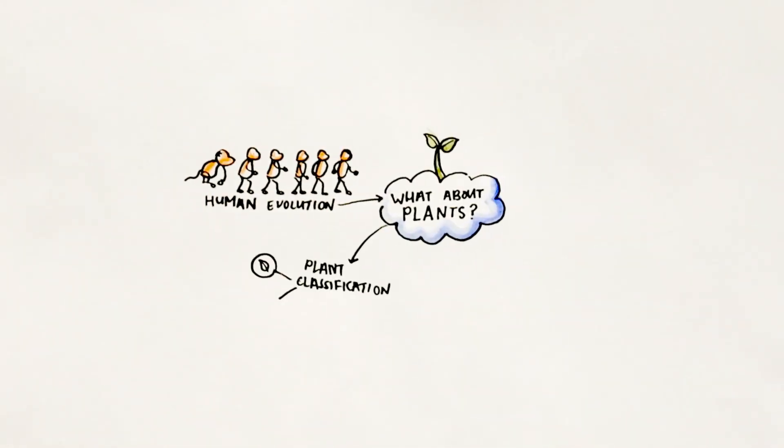It is widely believed that modern humans share common ancestors with the modern apes. But what about plants? Where do green plants come from?